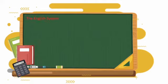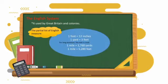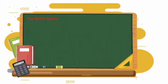The English system: It was used by Great Britain and colonies. The partial list of English measure about 1,500 AD was the following. For small distances: 1 foot is equal to 12 inches, 1 yard is equal to 3 feet. For long distances, the mile is used: 1 mile is equal to 1,760 yards, 1 mile is equal to 5,280 feet.